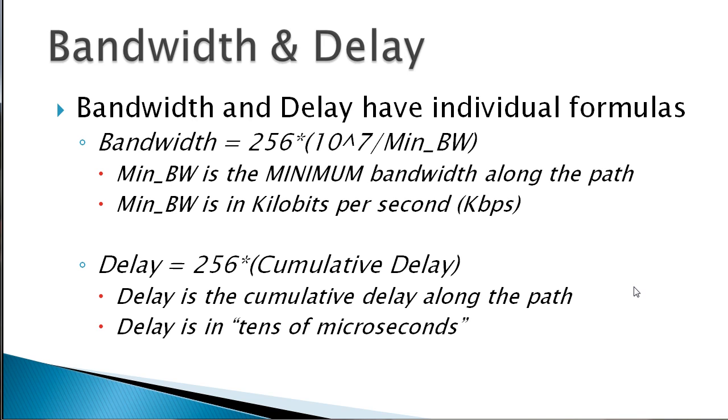When we say bandwidth or delay in that overall formula, those are individual variables themselves. When we reference bandwidth in the equation, what we really mean is 256 times 10 million (or 10 to the 7th power) divided by the minimum bandwidth along the path of the route in kilobits per second. Whenever we see delay in that formula, what we really mean is 256 times the cumulative delay along the path, and that is going to be in tens of microseconds. That's the unit we're working with here.